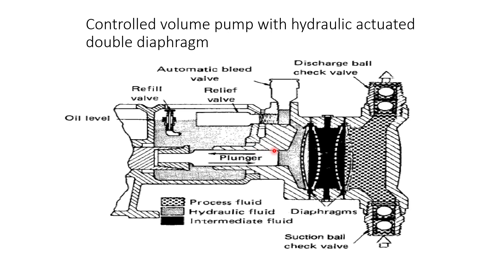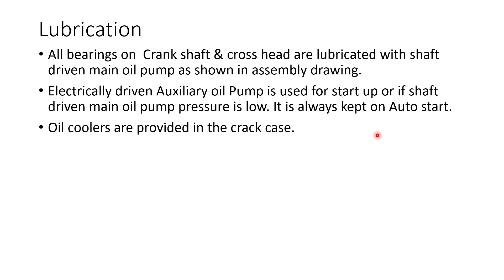In this slide, we can see a double diaphragm pump, called a control volume pump with hydraulic actuated double diaphragm. Sometimes when handling certain corrosive or toxic fluids, if they leak there can be a very big hazard. In that case, we use two diaphragms — one diaphragm here and a second diaphragm — with oil filled between the two diaphragms. The plunger pushes the oil and the oil pushes the diaphragm. When pushed to the right, the discharge valve opens and liquid gets discharged. When it moves to the left, the suction valve opens and the cavity gets filled.